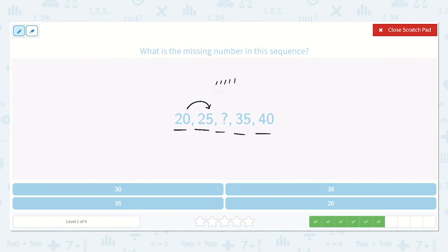1, 2, 3, 4, 5. So if we have 25, 26, 27, 28, 29, 30. So the missing number is 30. 20, 25, 30, 35, 40. Alright, there's our answer.